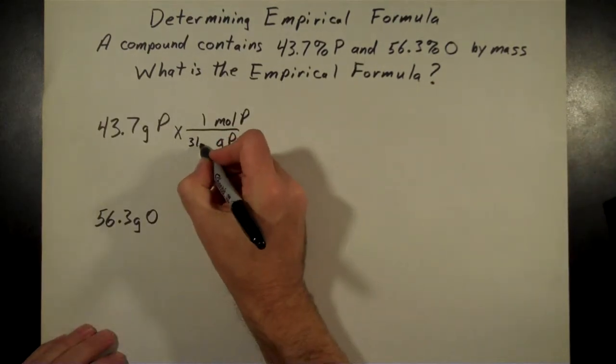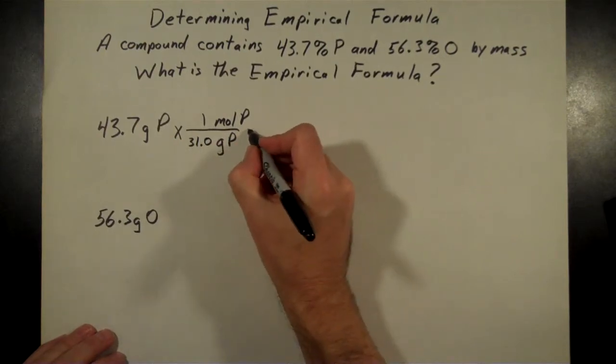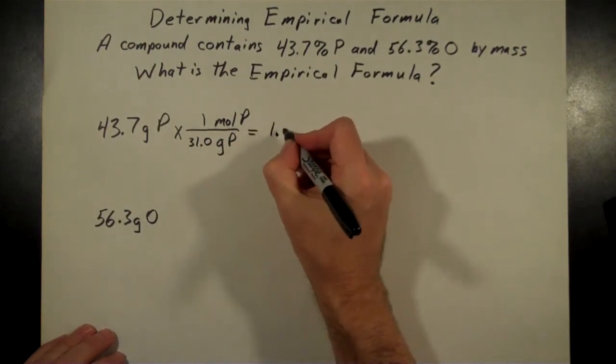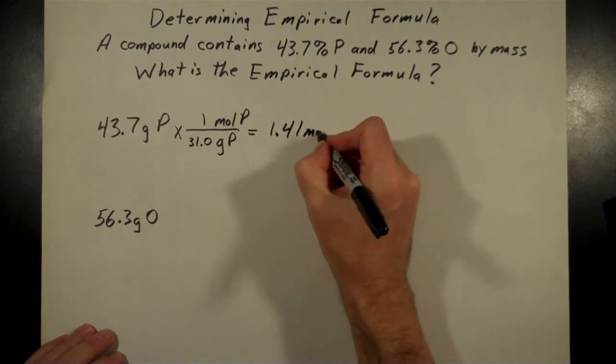We're just going to go with three significant figures for now. Doing that division, that comes out to 1.41 moles of phosphorus.